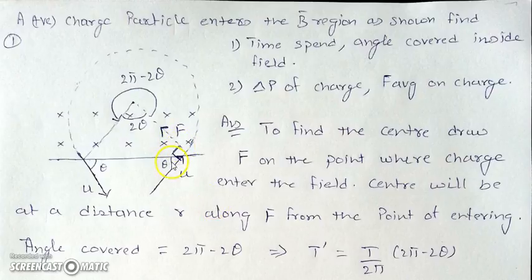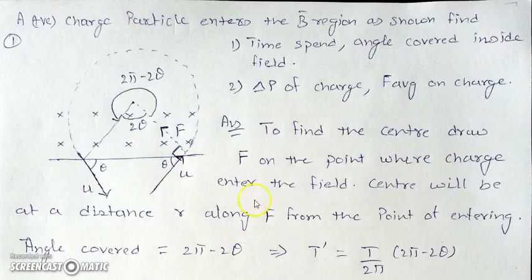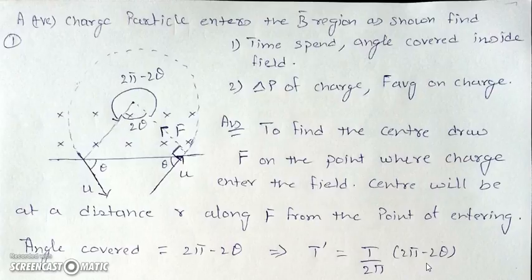With the help of symmetry, this angle is θ, so the angle covered inside the field will be 2θ, since both angles are 90 minus θ. You can get the time by the unitary method: the total time for 2π is the period T. So, the time for the angle (2π − 2θ) covered inside the field is T/(2π) × (2π − 2θ).